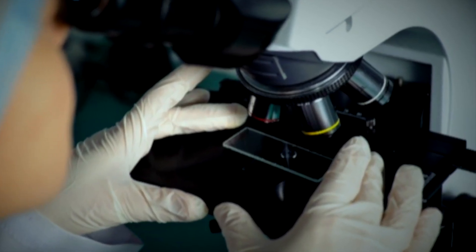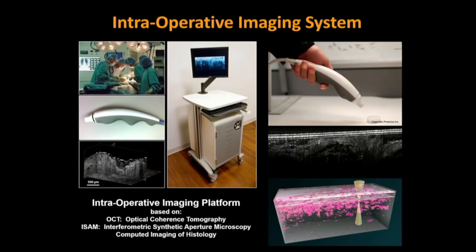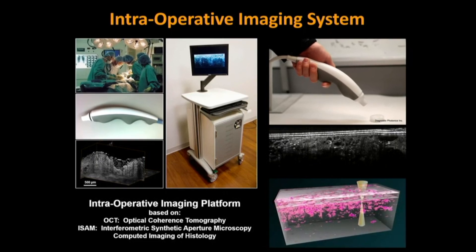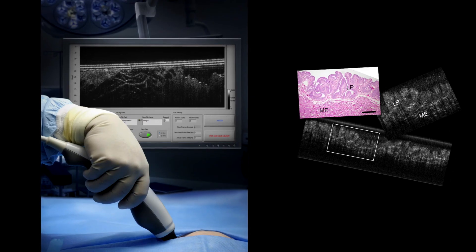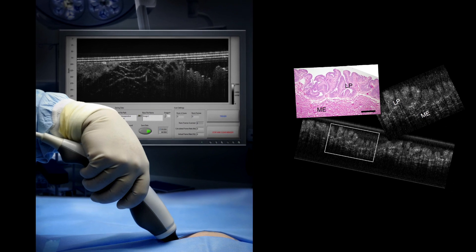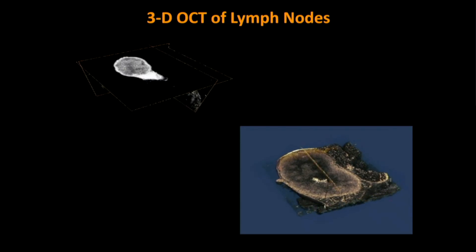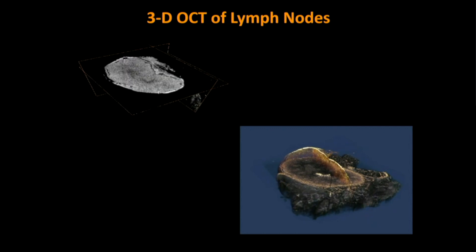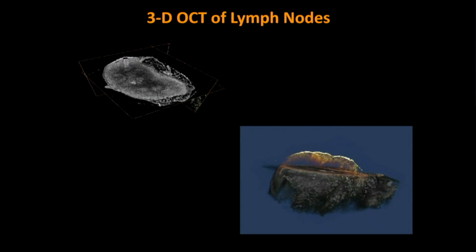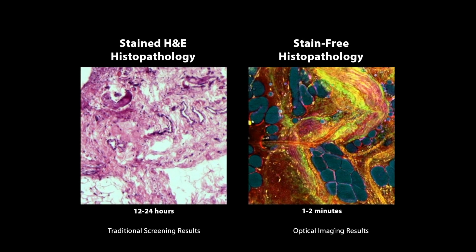Instead of the standard way of taking out tissue, taking a biopsy, processing it, and sending it to the pathology lab where they stain it and section it and look under a microscope, we can see those details in the living specimen. So in real time, the surgeon can scan the margins of that tumor mass and determine right away if there are tumor cells present.